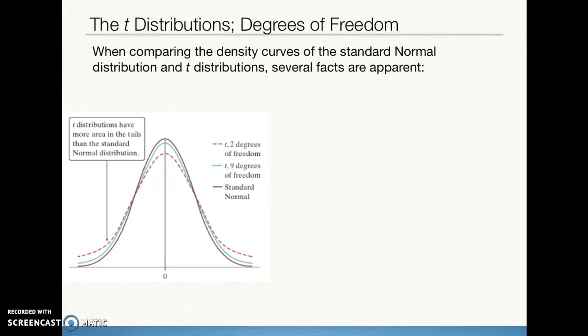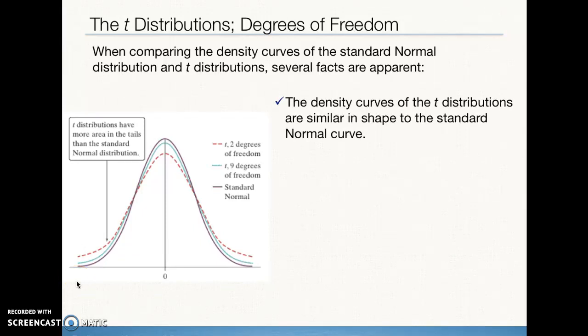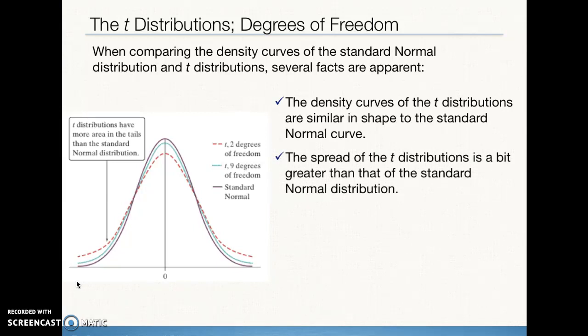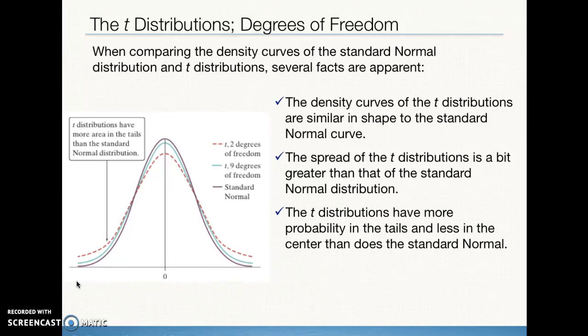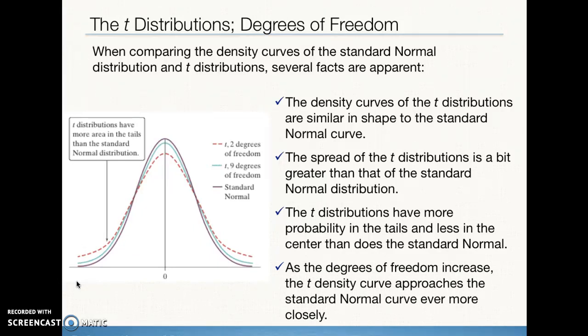For every sample size, there's actually a unique t-curve. We can see that the t-distribution curves are very similar to the standard normal curve, that bell shape, unimodal, symmetric shape. The spread is a little bit more than the standard normal. You can see that we have that lower frequency in the center, a little bit more tail area, and it's a little bit wider. The t-distribution has more probability in the tail and less in the center than the standard normal, but overall the shape is very similar. And as the degrees of freedom increases, or as the sample size increases, the t-curve is going to approach the standard normal curve.